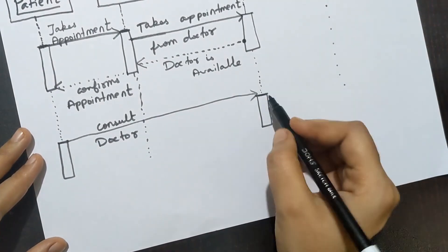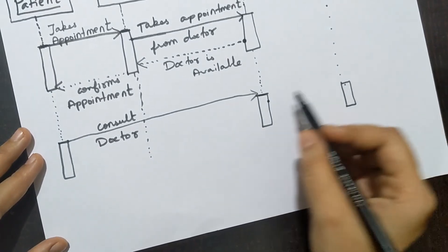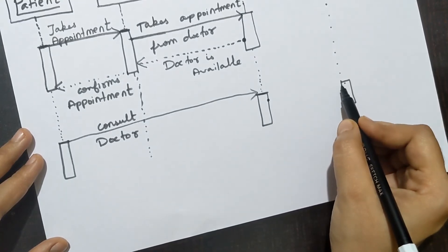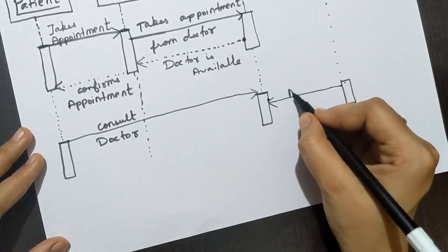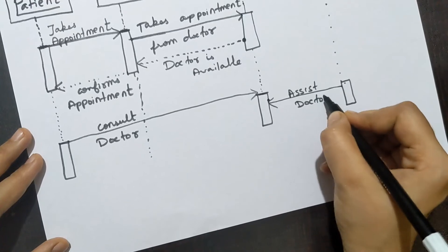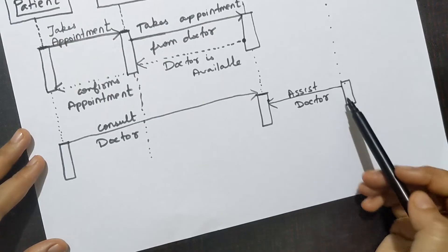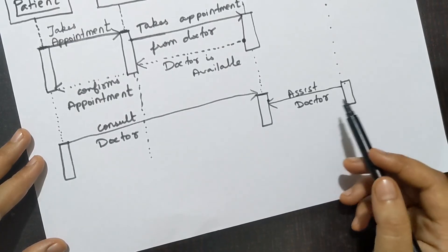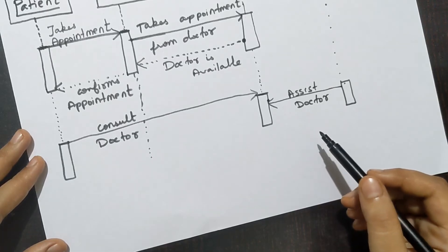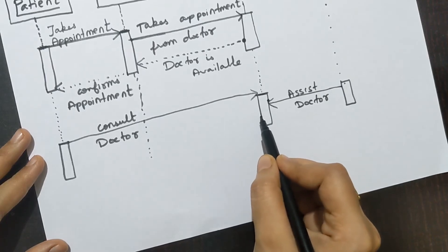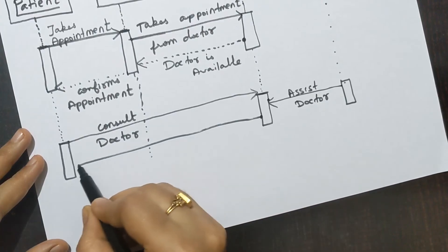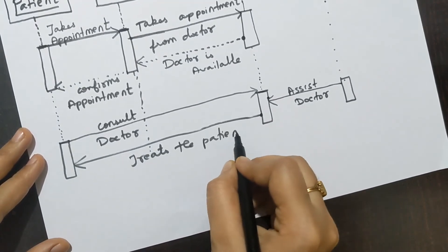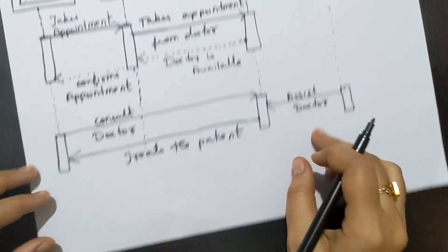The doctor will not do everything alone — the nurse should also help. So draw a rectangular box for the nurse a little lower and draw an arrow from doctor to nurse, writing 'assisting doctor.' The nurse is drawn a little lower because consulting the doctor might be at 12:00, but the nurse will be assisting at 12:05, so there is a difference in time.